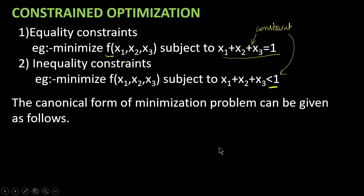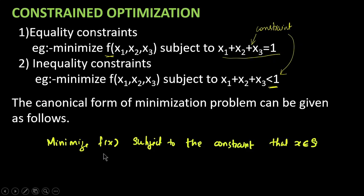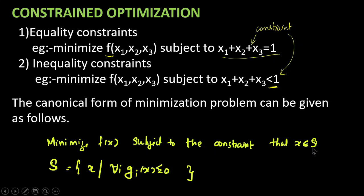The canonical form of the minimization problem is: minimize f of x subject to the constraint that x belongs to S, where S is the set of constraints — S is the set of all x such that for all i, g_i of x is less than or equal to 0. Here, g of x represents the constraint functions.